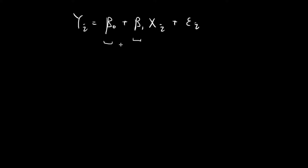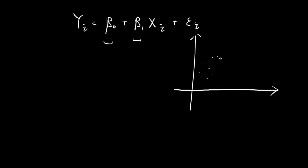The true values of the betas might lead to this straight line over here. So let's say we have our data points, and the true values of beta0 and beta1 would lead to a straight line that looks something like this. This straight line here would have an intercept of beta0 and a slope of beta1.